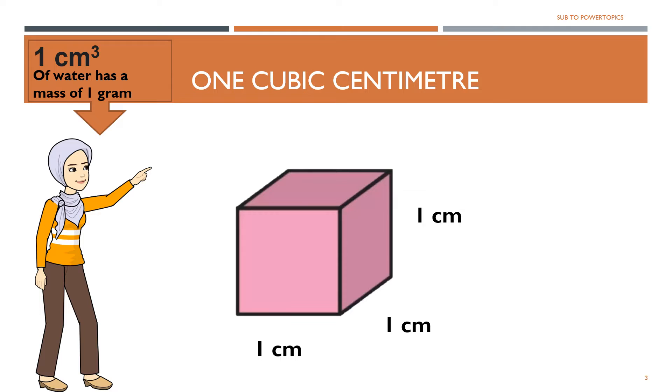Look at this cube. It has a length, a width, and a height of 1 cm. It is called a centimeter cube. You say that it has a volume of 1 cubic centimeter, also written as like this. And this is a quick fact for you: Did you know that 1 cm cube of water has a mass of 1 gram?